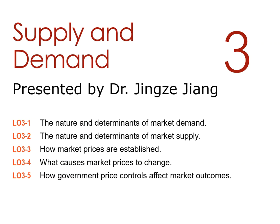After learning this chapter, you should be able to know the nature and the determinants of market demand and market supply, how market price and quantities are established, what causes market price to change, and lastly, how government price controls affect market outcomes.